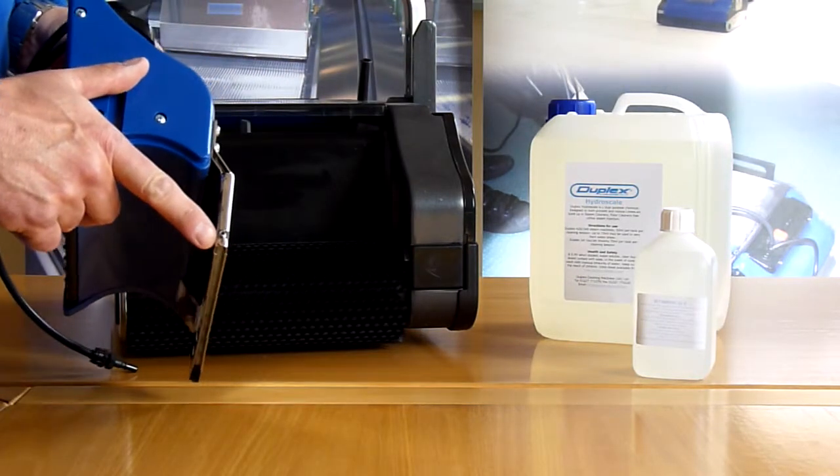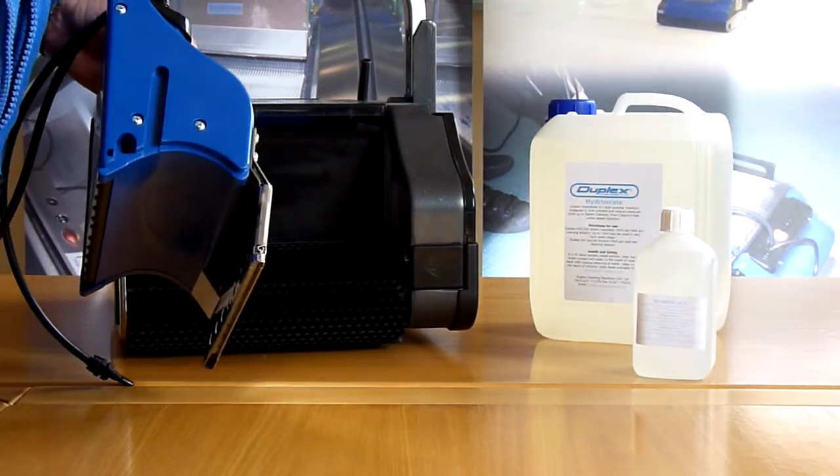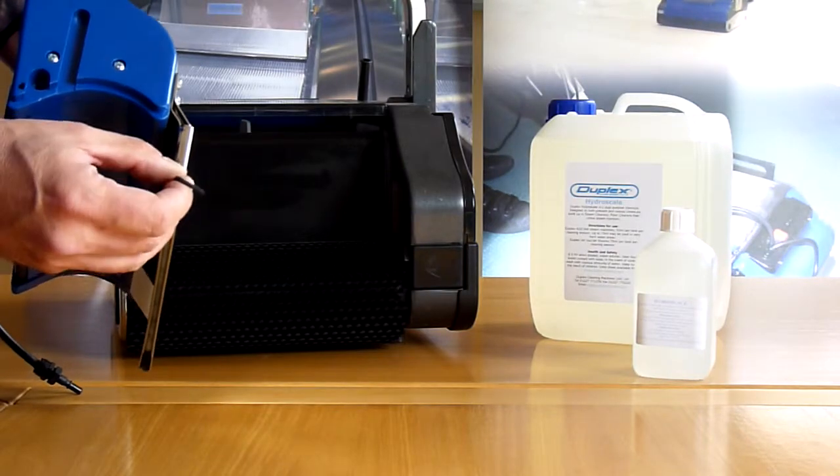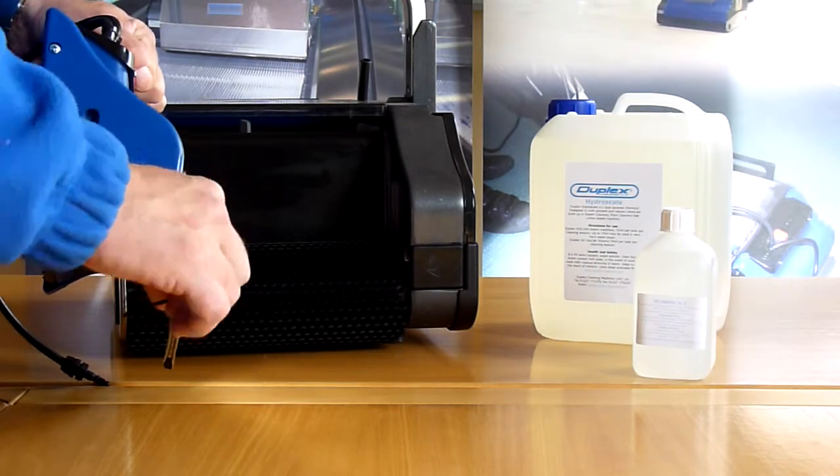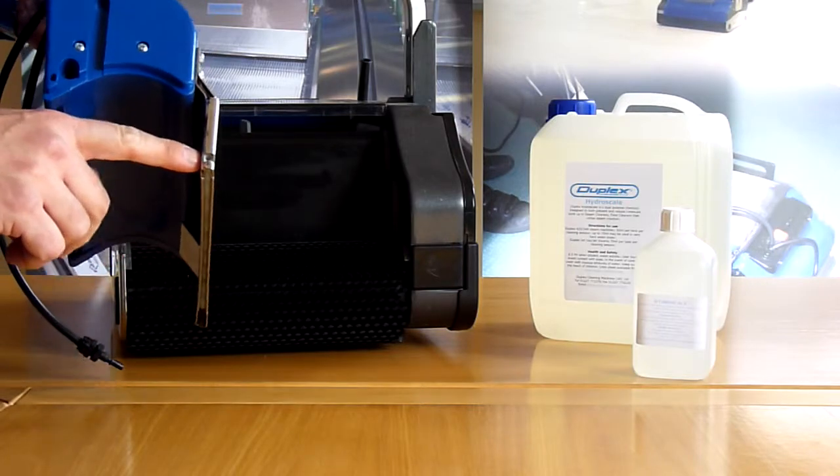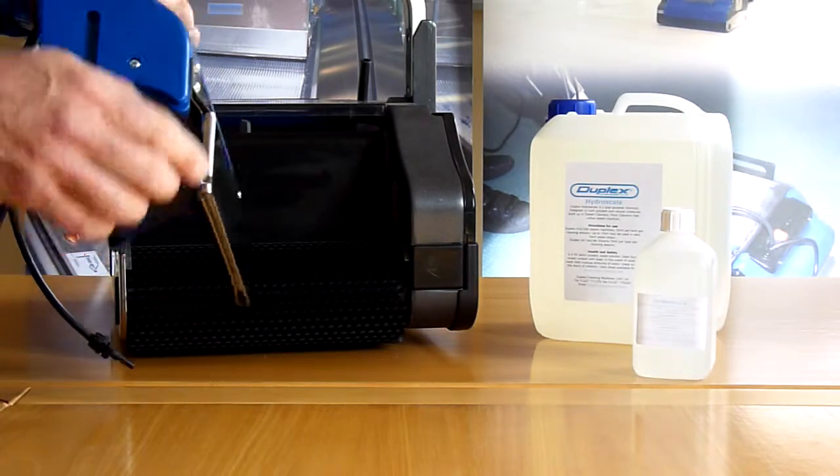On the side of the machine, you have a small grub screw. This needs to be removed, which leaves a small hole that will allow steam to come out of the pipe.